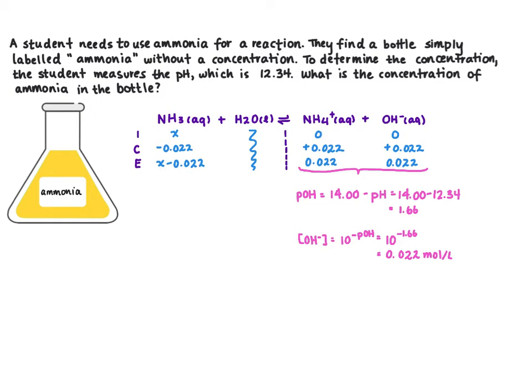Now we can write our equilibrium expression. So Kb is going to equal the concentration of ammonium times hydroxide divided by ammonia.